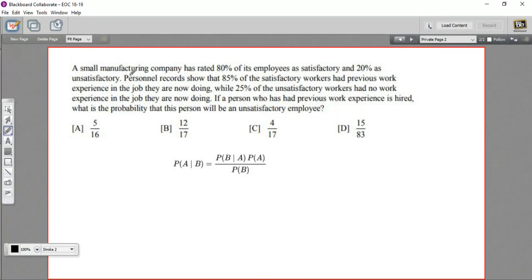This one says a small manufacturing company has rated 80% of its employees as satisfactory and 20% as unsatisfactory. That seems pretty simple, and actually I'm going to stop right here. I'm just going to leave a mark to know where to pick up, and I'm going to go down to the very end of the problem and try to figure out what they're asking for. What's the probability we're actually looking for? The last sentence says if a person who has previous work experience is hired, what's the probability that the person will be an unsatisfactory employee? That's a reasonable thing to know. They want to know how many of these people we hire, even though they had experience, are going to end up being not satisfactory.